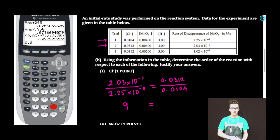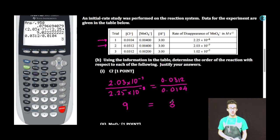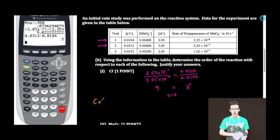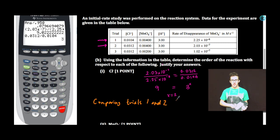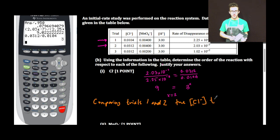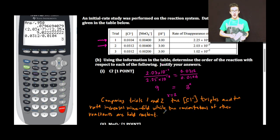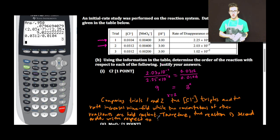Dividing the two concentrations, we have tripled our concentration and the rate has gone up ninefold. We ask: what power do I need to raise 3 to in order to equal 9? The answer is 2. Comparing trials one and two, the chloride ion concentration triples and the rate increases ninefold while the concentrations of other reactants are held constant. Therefore, the reaction is second order with respect to chloride ion.